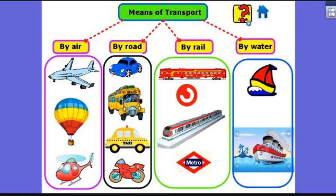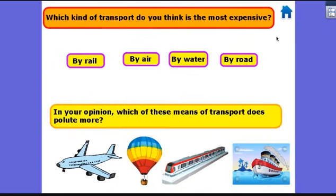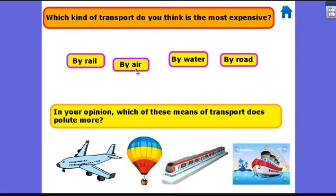Let me ask you a couple of questions. Which kind of transport do you think is the most expensive? These four classifications: by air, by water, or by road? The most expensive — the more money you have to spend to travel. I think by air is one of the most expensive, and maybe by water too.